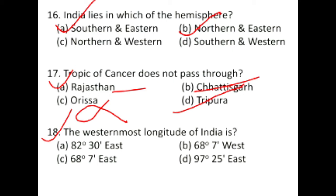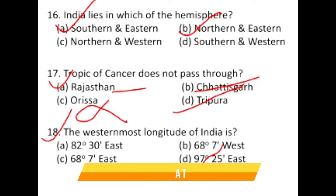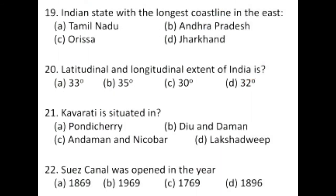The westernmost longitude of India is located in Gujarat, and that is 68 degrees 7 minutes east. Question number 19: the Indian state with the longest coastline in the east — while overall it is Gujarat, since the question asks specifically about the east, the answer is Andhra Pradesh.